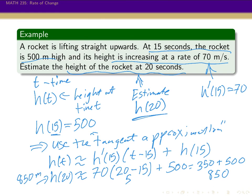Our approximation for the height is 850 meters. We can check that the units make sense: h prime has units of meters per second, and the difference in time (t minus 15) is in seconds. So meters per second times seconds gives meters — that 350 is in meters. Adding 500 meters gives meters plus meters, which gives meters for our answer. That is all for this video. I will see you again soon.